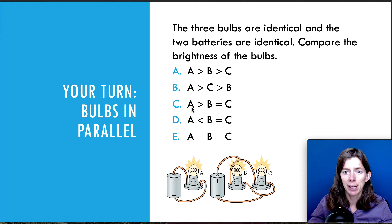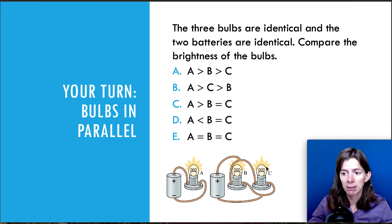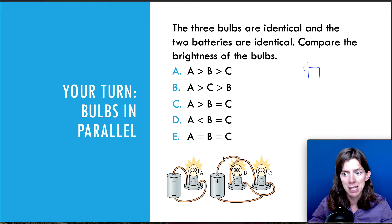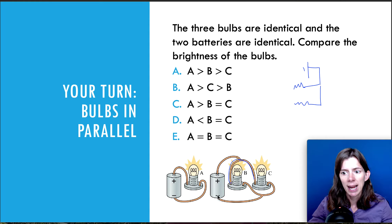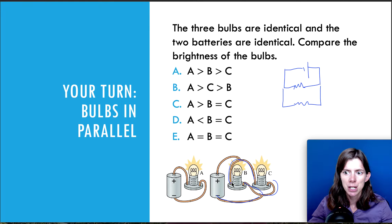Let's see if you can apply the same type of logic for this problem where the bulbs are connected in parallel instead of in series. In this circuit on the right, if we redraw the battery, you can see that there's a wire from the positive terminal that breaks off and reaches the light bulb or resistor. On the negative terminal, you have a wire that breaks off to the other end of each resistor — so this is just another way to show two bulbs in parallel.